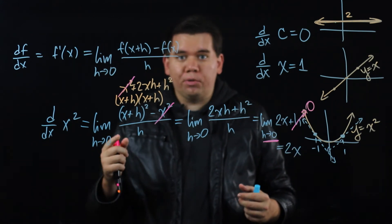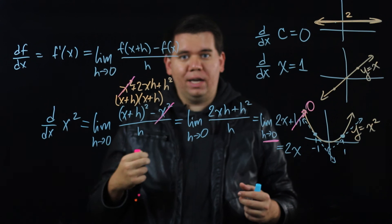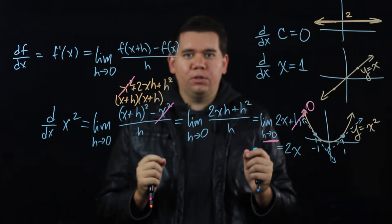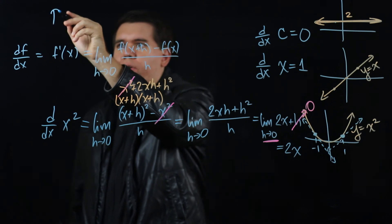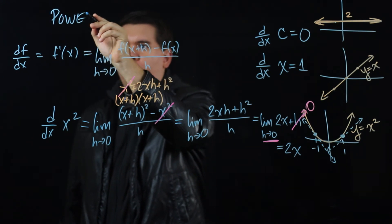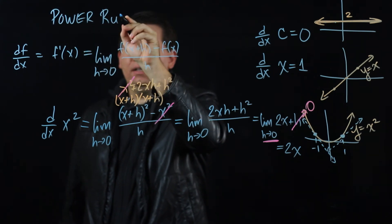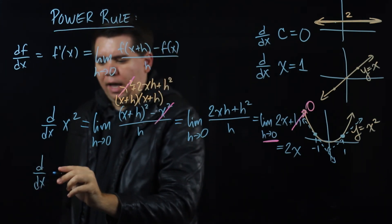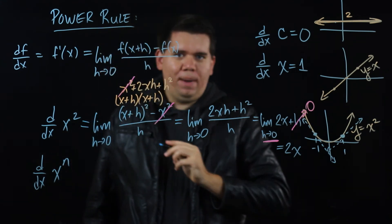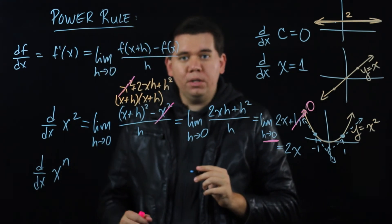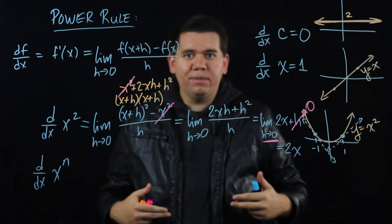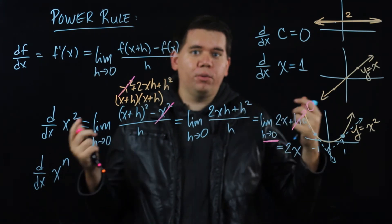Is there a way so that when we calculate the derivative of x squared, we don't have to go through this every time, but we can do it a little bit faster? Or how about x cubed, or x to the 4th, or x to the 5th, or x to the 6th? And so the first shortcut we're going to do is called the power rule. And it's going to give us a way of calculating the derivative of x to any power n. And so what we're going to do is calculate this one time in general.